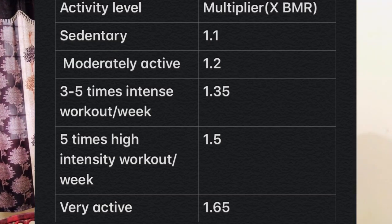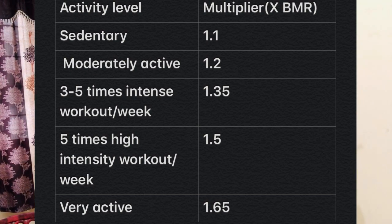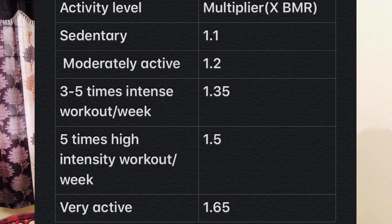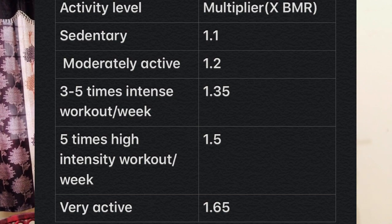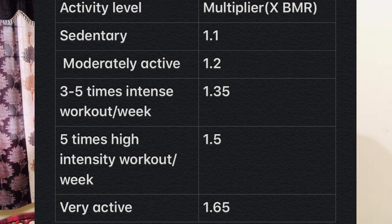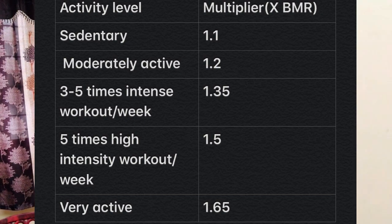Now let's apply the multiplier. If you lead a sedentary lifestyle — meaning no workouts, only office or normal daily work — multiply your BMR by 1.1. Those with a moderately active lifestyle doing workouts 1 to 3 times per week should use a multiplier of 1.2. Active individuals doing 3 to 5 days of intense workouts per week should use 1.35. Those doing 5 days of intense workouts should use 1.5.